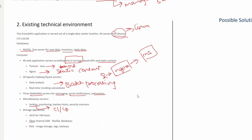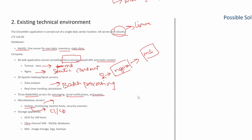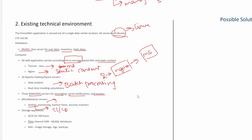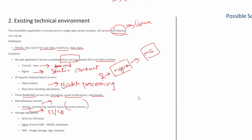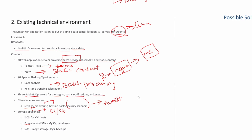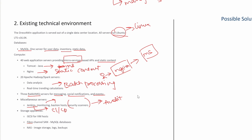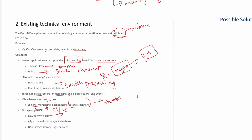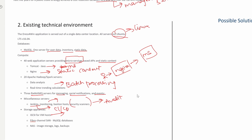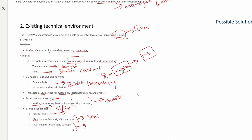Other miscellaneous servers include Jenkins for CI/CD and DevOps, monitoring tools, and a bastion host — used to connect to production environments through an intermediary server for security rather than exposing production directly to administrators. They also use security scanners for audit reports. For storage, they use SAN for MySQL and for image storage, logs, and backups.